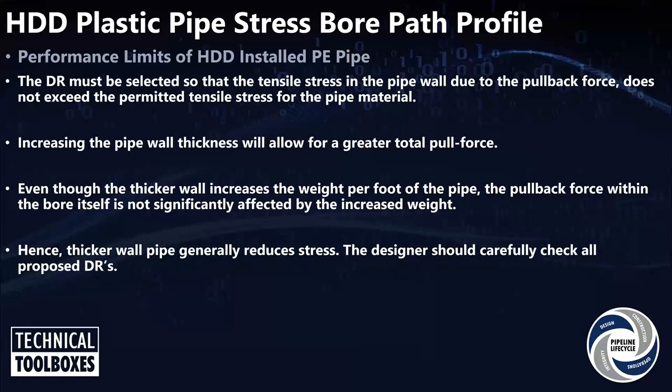We've got to pick a DR so the tensile stress is strong enough during pullback and we don't exceed the permitted tensile stress for the pipe material. We can increase the pipe wall to allow for a greater pull force. Even though the thicker wall gives more weight, the pipe is buoyant in that mud, so it doesn't really affect the pull loads much. A very common mitigation method for high tensile loads on plastic pipe is to go to a thicker wall.